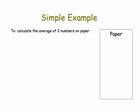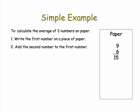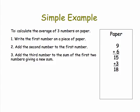Let's take a simple example, an algorithm for averaging three numbers. Step one is to write the first number on a piece of paper. Step two is to add the second number to the first number. Step three is add the third number to the sum of the first two numbers, giving a new sum. So our new sum is 18.